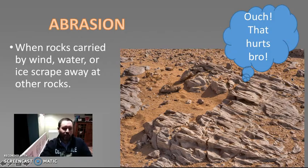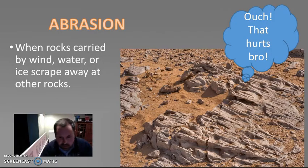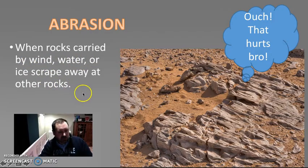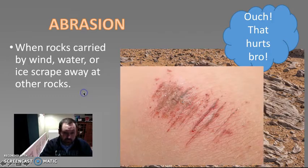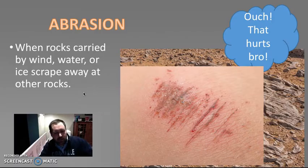Another kind is abrasion. Abrasion is whenever wind, water, or ice is carrying sediment particles, and those sediment particles are smacking another larger rock. You can see it's got abrasions on it — scrapes — because it's been scraped slowly and steadily. When rock carried by wind, water, or ice scrapes away at other rocks, that's abrasion. An abrasion is a scrape. Maybe this has happened to your knee or your elbow. So it's two things physically touching, scraping against each other.